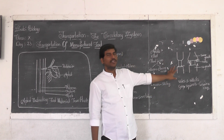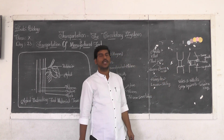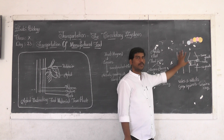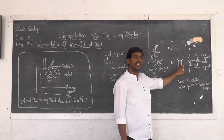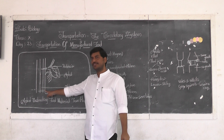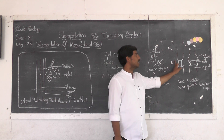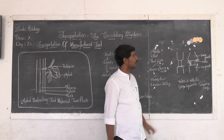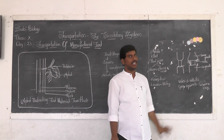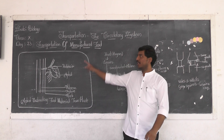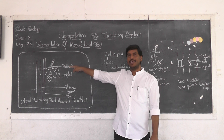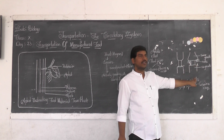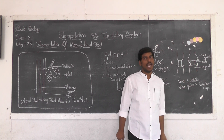One more activity can be performed to demonstrate that phloem helps in transportation of food material. If you take a complete plant and remove only the bark — the exterior part — along with the phloem which is exterior, then the food material being translocated from the aerial parts downward cannot come down or reach down. This is because the continuity of the phloem is broken.